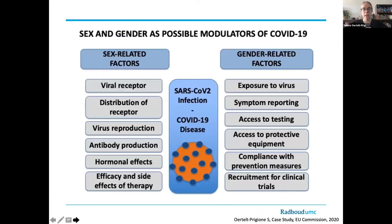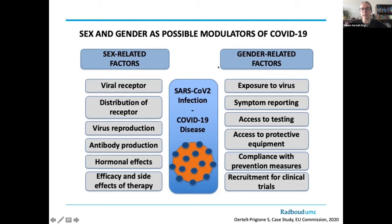In medicine we are relatively categorical about separating sex and gender. Everything under the broader umbrella of biology — genetics, hormonal levels, anatomy and physiology — we classify under sex. Everything that has to do with humans as a whole — social, behavioral, structural factors — we classify under gender.